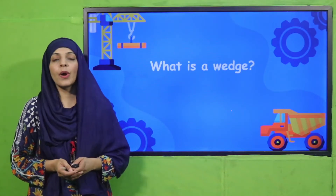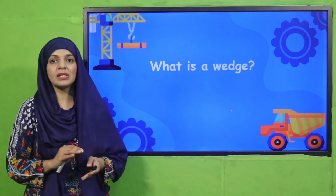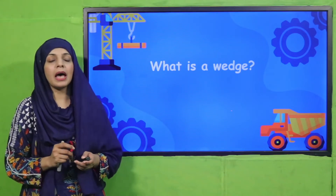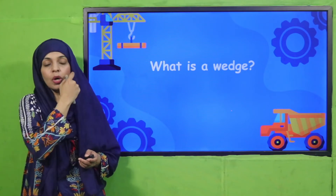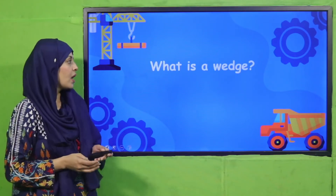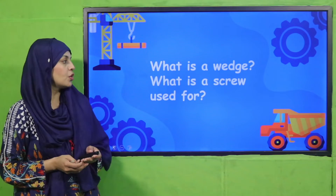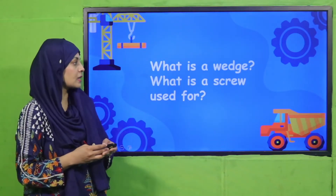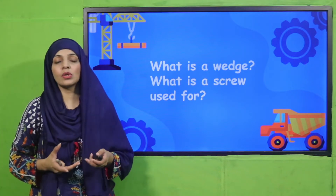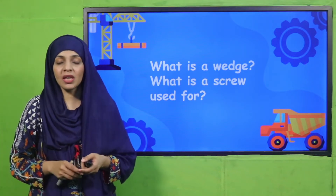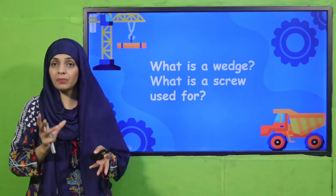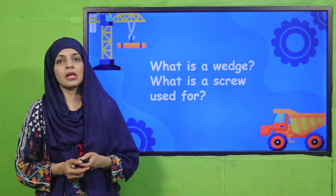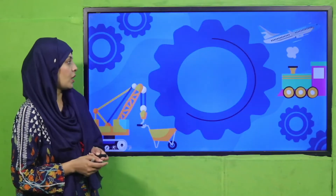What is a wedge? A wedge is broad and flat from one side and sharp on the other side, and that is how it is used to tear up wood. What is the screw used for? It has different uses — it can be used to join two things together, it is also used inside lids, inside taps, and even inside electrical bulbs. So screws are very important.